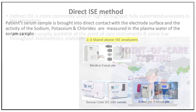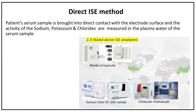With the direct ion-selective electrode method, the patient sample is brought into direct contact with the electrode surface, and the activity of sodium, potassium, and chloride are measured directly in the plasma water of the serum sample.